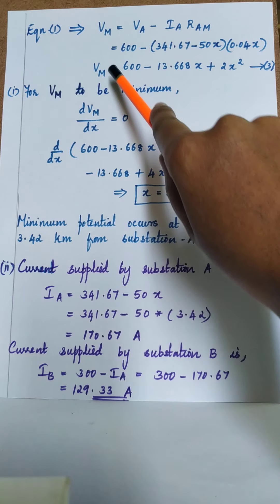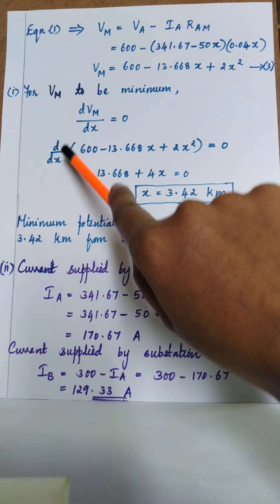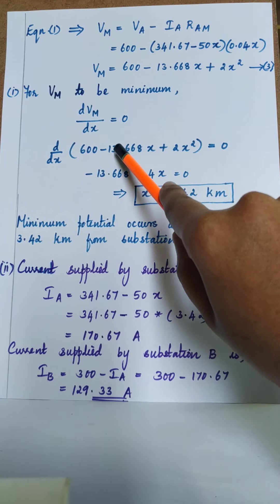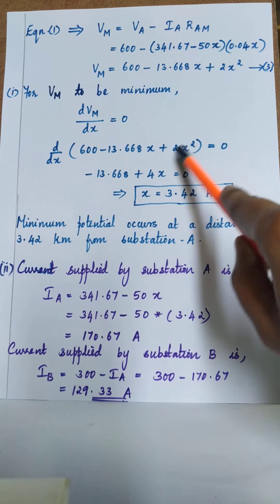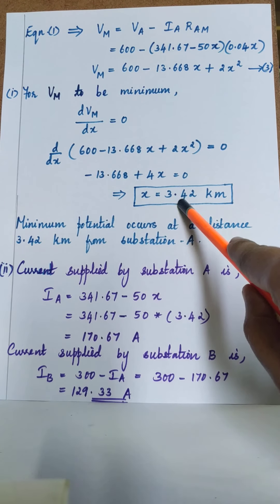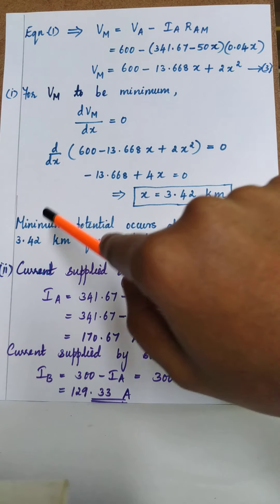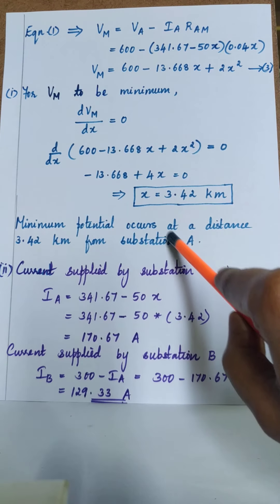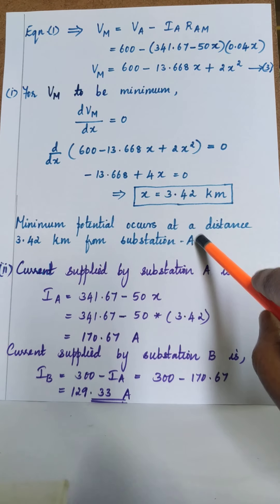Setting dVm/dx = 0: differentiating 600 minus 13.668x plus 2x² with respect to x gives minus 13.668 plus 4x = 0. Solving, x = 3.42 kilometers. So the answer for part one is that the minimum potential occurs at a distance of 3.42 kilometers from substation A.